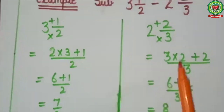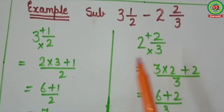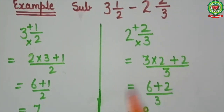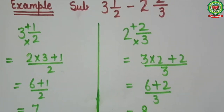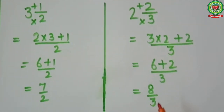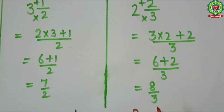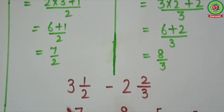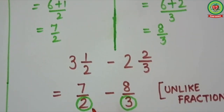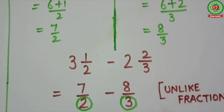Now 2 whole number 2 upon 3: it will come 3 into 2 plus 2 upon 3 — that is 6 plus 2 upon 3 — which equals 8 upon 3. So our question becomes 3 whole number 1 upon 2 minus 2 whole number 2 upon 3, which is now 7 upon 2 minus 8 upon 3.